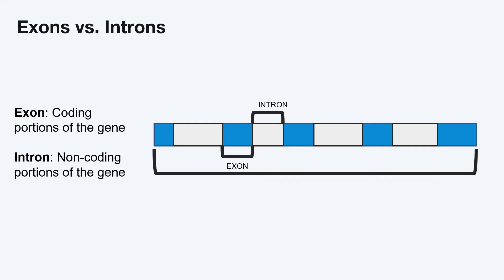In many genes, there are parts of DNA that are not used to make the protein. These unused, or non-coding, areas of the gene are called introns. The portions of the gene that have the instructions for proteins are called the coding portions, or exons.